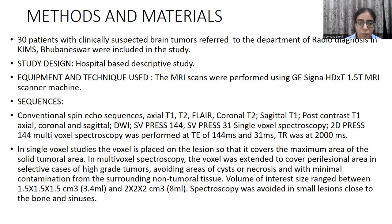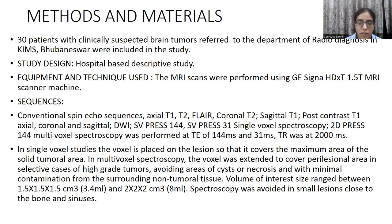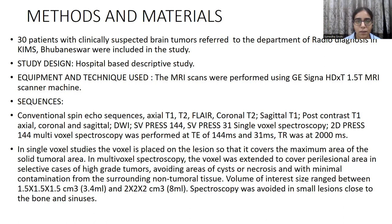In single-voxel studies, the voxel is placed on the lesion so that it covers the maximum area of the solid tumoral area. In multi-voxel spectroscopy, the voxel was extended to cover the perilesional area in selected cases of high-grade tumors, avoiding areas of cysts or necrosis, and with minimal contamination from surrounding non-tumoral tissue. Volume of interest ranged between 1.5 x 1.5 x 1.5 cm and 2 x 2 x 2 cm³. Spectroscopy was avoided in small lesions close to bones and sinuses.